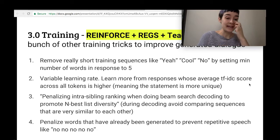Okay, penalizing intra-sibling ranking. What that means is we don't want to choose a bunch of utterances that are pretty similar. We want more diverse utterances that we're choosing as our best ones.